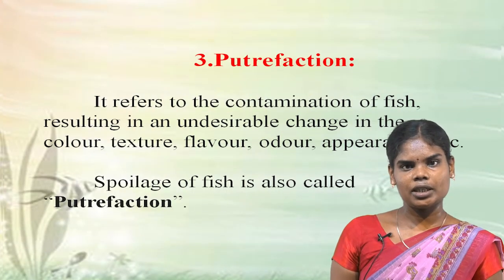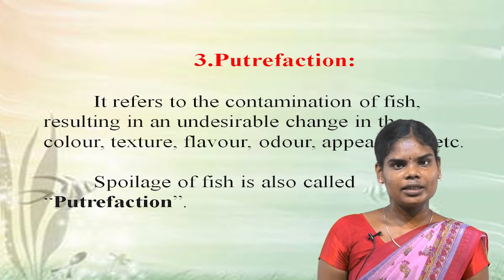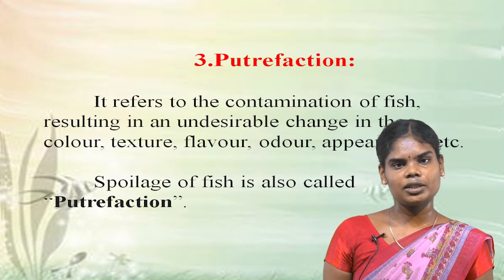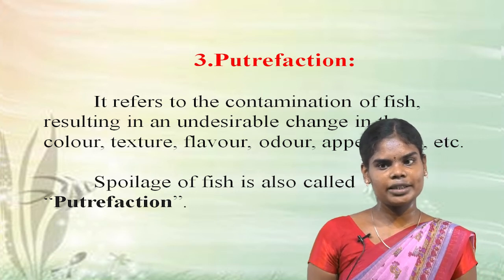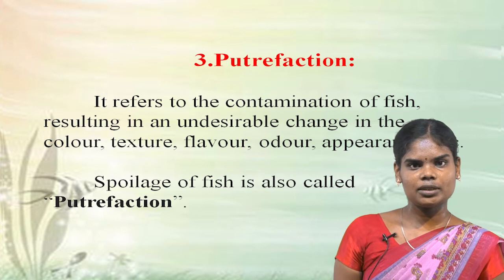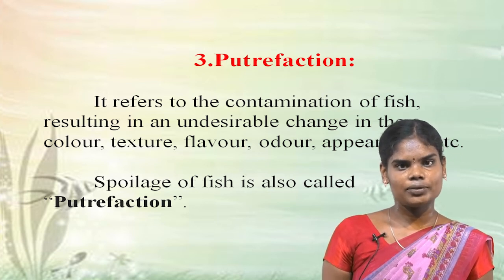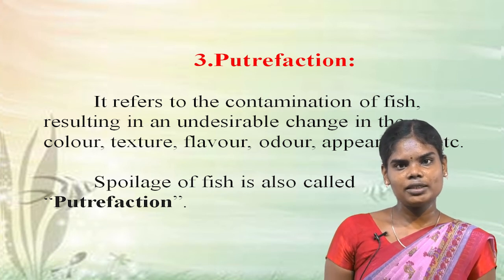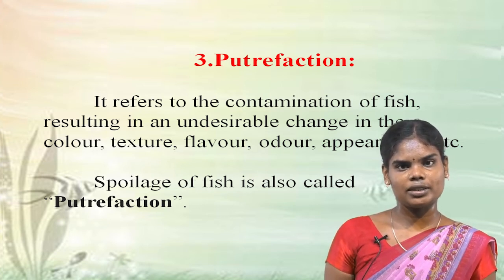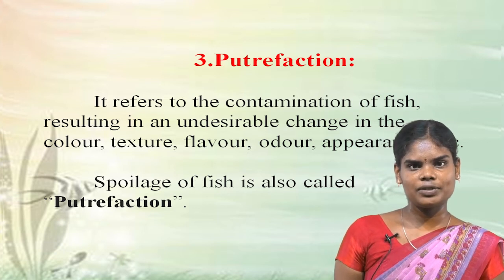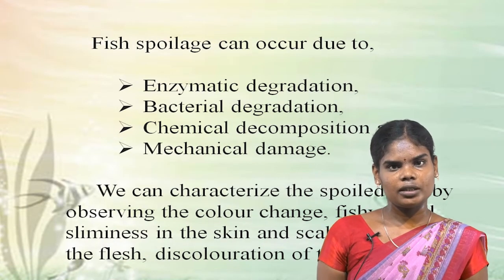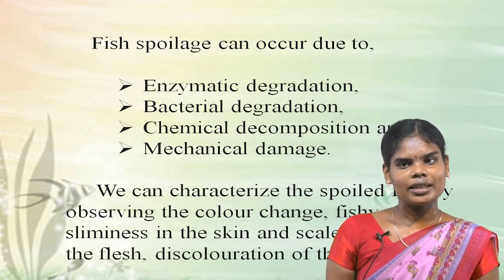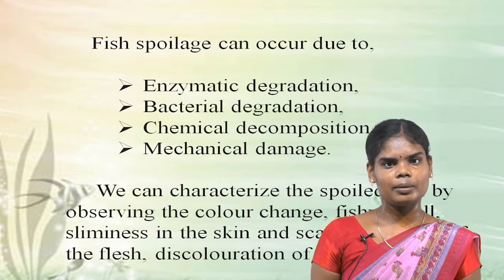Next is bacterial invasion and putrefaction, the third process of fish spoilage. It refers to contamination of fish, causing changes in colour, odour, texture, flavour, appearance and stiffness of muscles. Spoilage of fish is otherwise called putrefaction. Fish spoilage occurs due to many processes: enzymatic degradation, bacterial degradation, chemical decomposition, and mechanical handling.